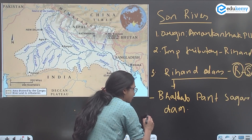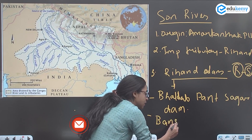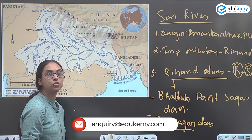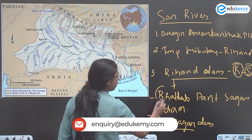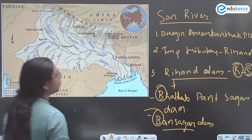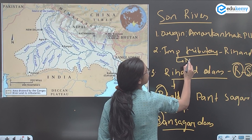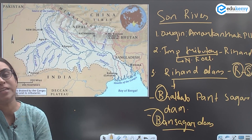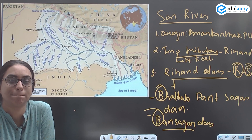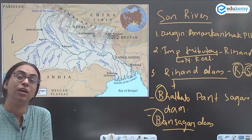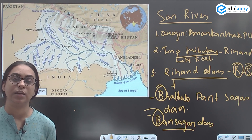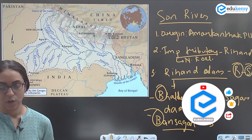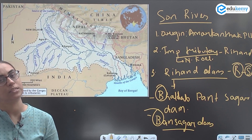Another important tributary of Son is North Koel. As a quick recap: Govind Sagar Dam is on the Satlaj, Phong Dam is on the Beas, and the Ballav Pant Sagar Dam is on the Rihand River, a tributary of Son.